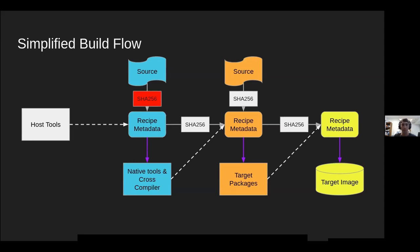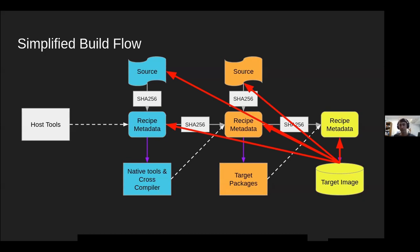As an example, if the source code for a recipe changes, that triggers everything to get rebuilt because all the hashes change. The native tool or cross-compiler recipe gets a new hash, the target recipe gets a new hash rebuilding target packages, and that causes the final image to be rebuilt. Because of this sophisticated hashing and tracking, we have pretty good traceability just from how the build system works. We can take a target image and trace back through all these hashes to the actual recipe metadata and even back to the source code.